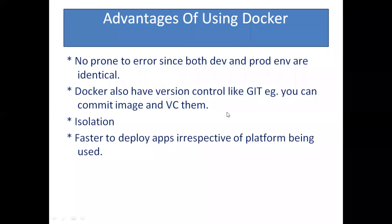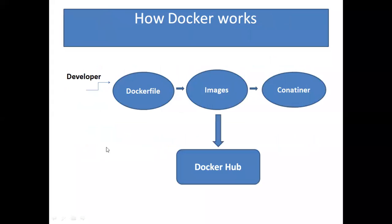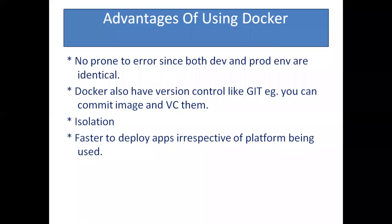Docker also has a version control system where you can commit and version control images. Once you push an image to Docker Hub for the first time it is version one, and when you push it again it becomes version two, and so on. If one image is broken, you can roll back to a previous version easily.